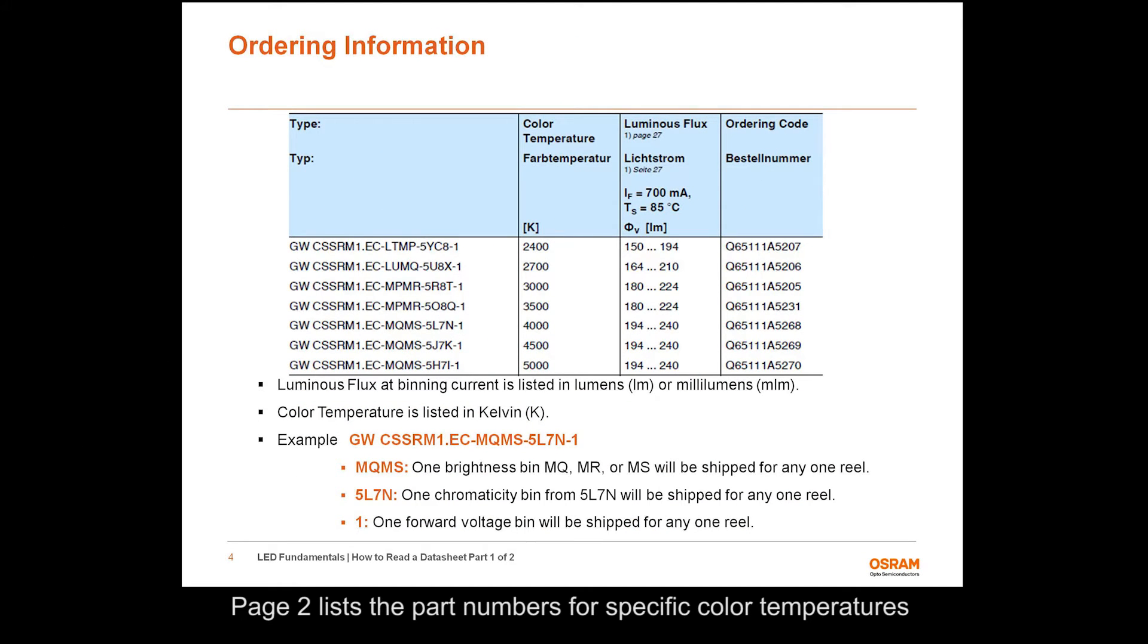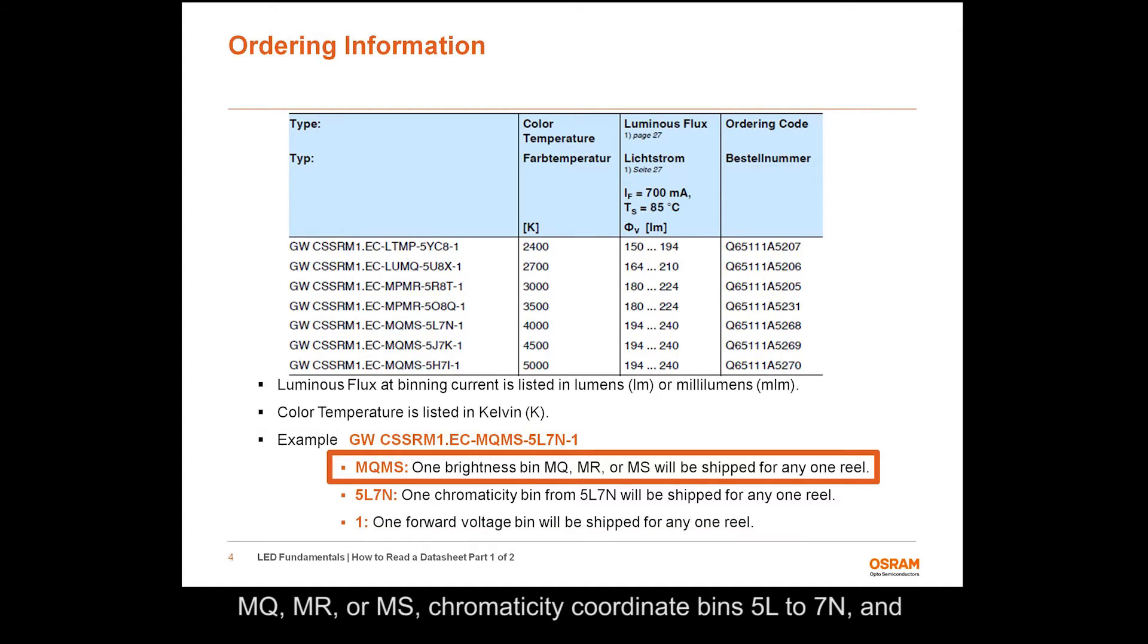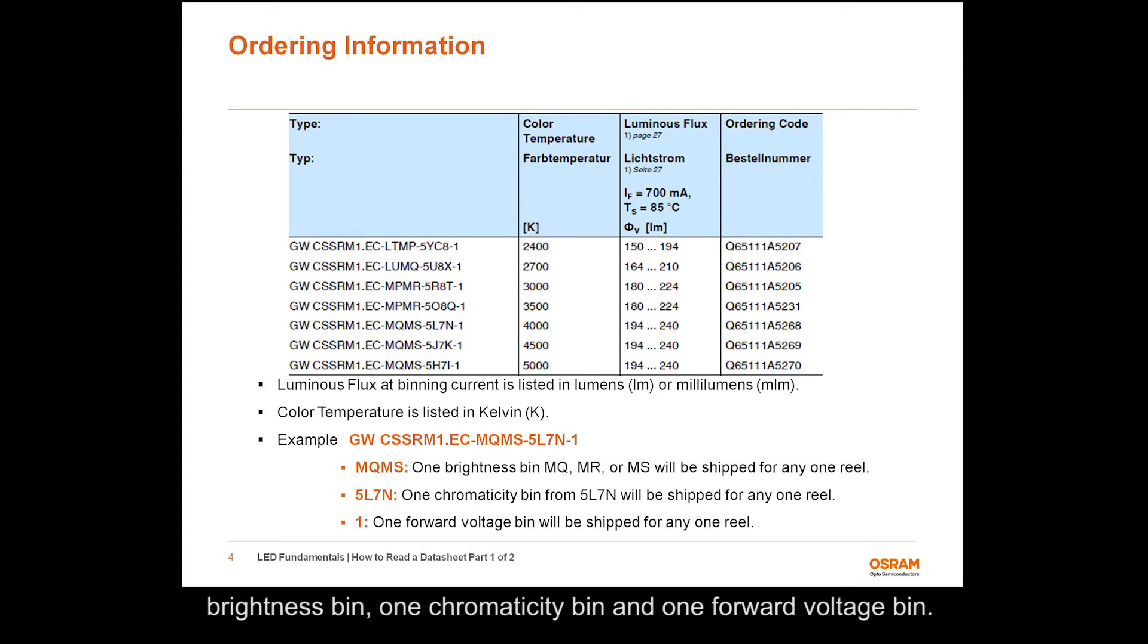Page 2 lists the part numbers for specific color temperatures of the LED. Part numbers include the order bins which indicate the brightness, chromaticity coordinates, and forward voltages of the LED. An explanation of a part number is listed on this slide. In this example, the part number tells the user they can receive LEDs from brightness bins MQ, MR, or MS, chromaticity coordinate bins 5L to 7N, and any forward voltage bin. A single reel of LEDs will contain only one brightness bin, one chromaticity bin, and one forward voltage bin.